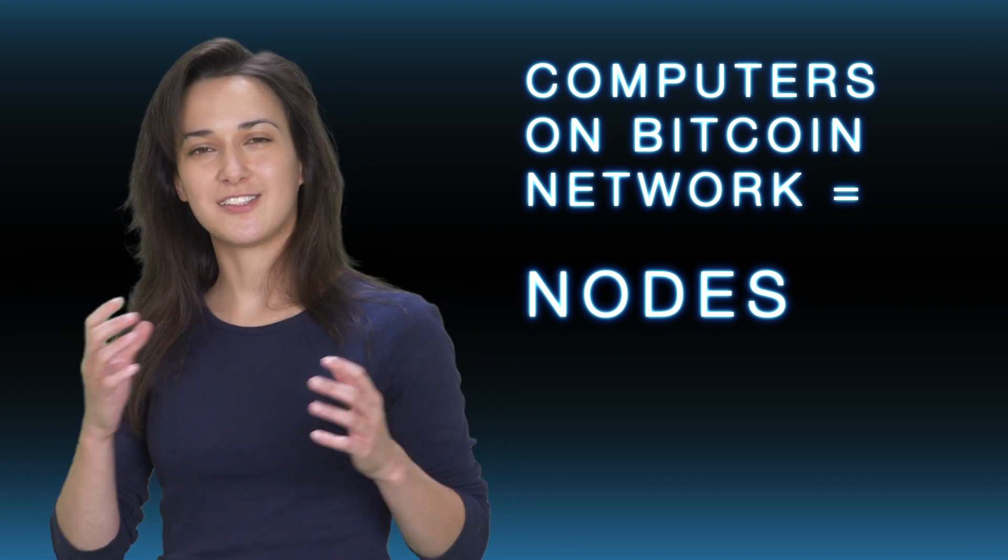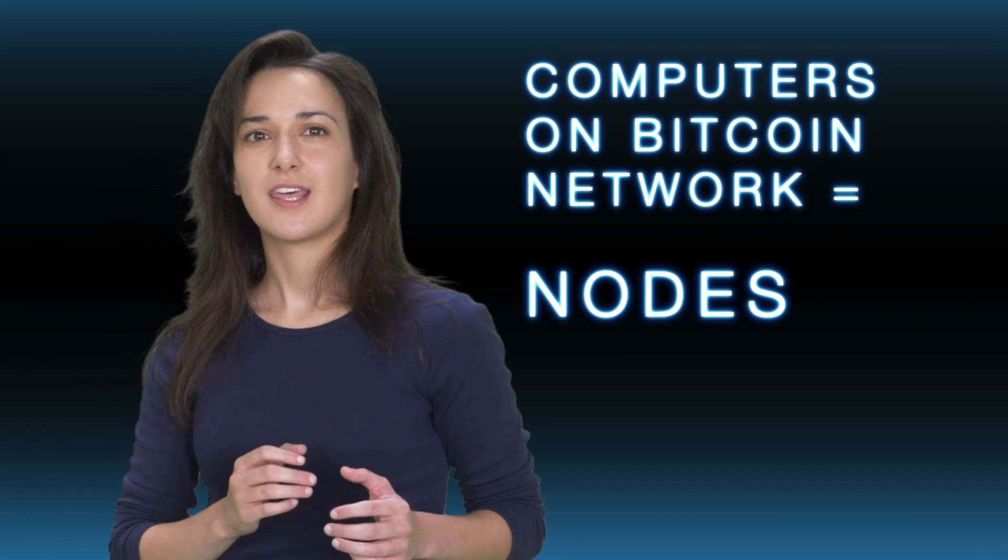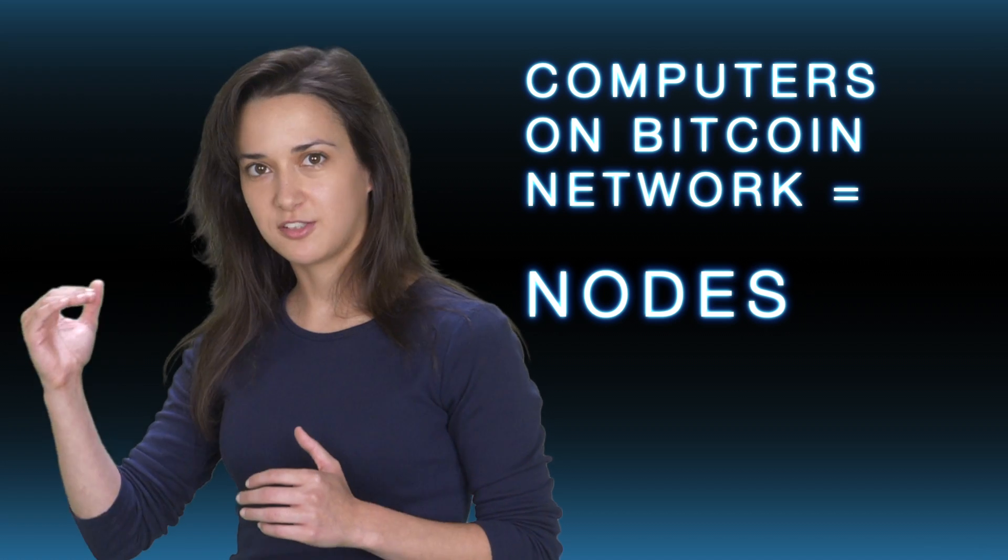So, the blockchain network has several nodes or computers that it saves all of the recorded blocks of transactions on. This is where the word distributed or decentralized ledger comes from.